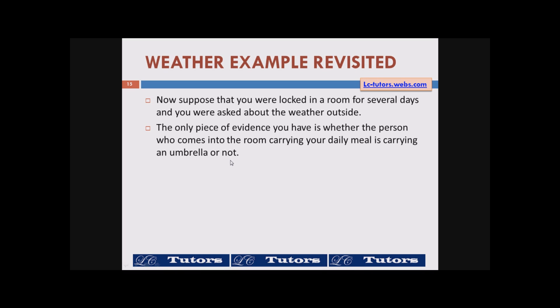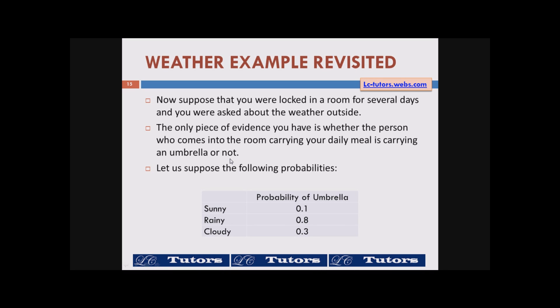The person comes to bring you food and may carry an umbrella depending on the weather outside — that is the observation. Using that observation, there can be possible probabilities: if it is a sunny day, it is highly unlikely he brings an umbrella; if it is a rainy day, he brings an umbrella; if it is a cloudy day, he might bring an umbrella. So the probability of bringing an umbrella depends on the weather.